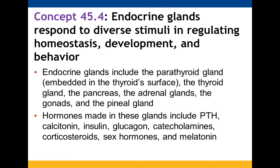Endocrine glands respond to many stimuli to regulate homeostasis, development, and behavior. The endocrine glands include the parathyroid (found within the thyroid), the thyroid itself, pancreas, adrenal glands, gonads, and the pineal gland. Hormones made in these glands include PTH, calcitonin, insulin, glucagon, catecholamines, corticosteroids, sex hormones, and melatonin.